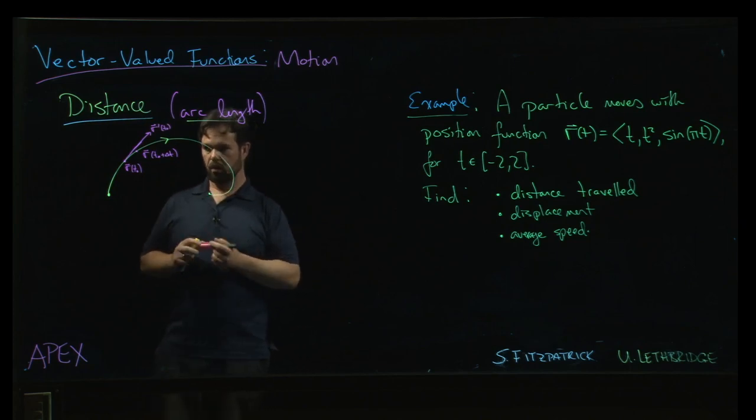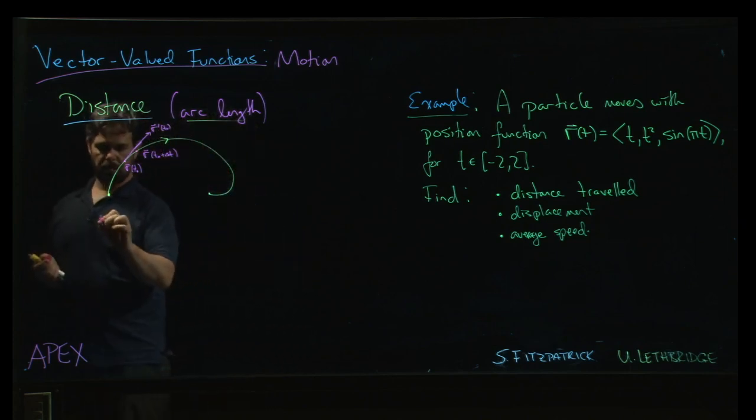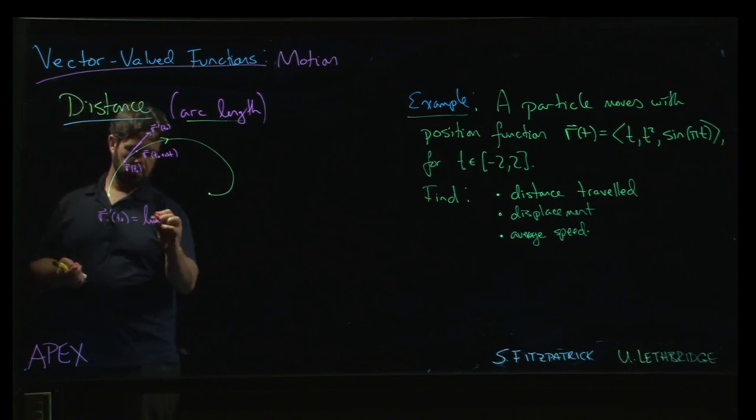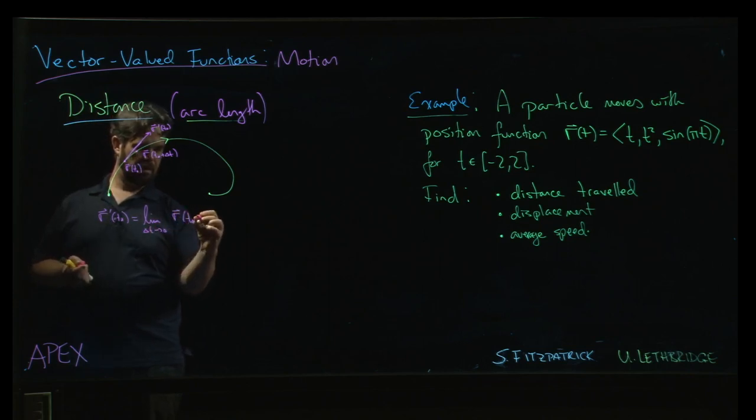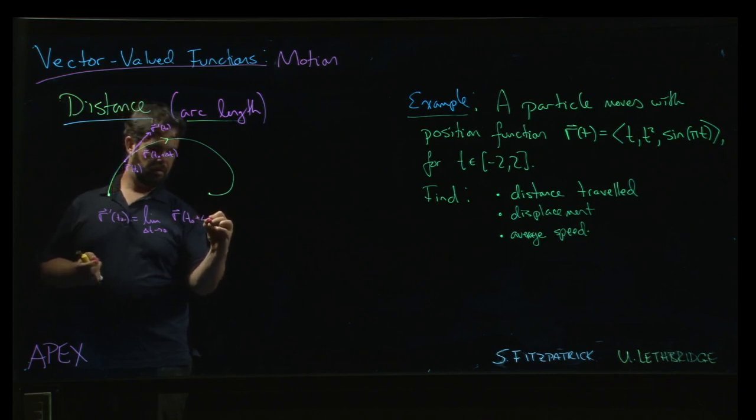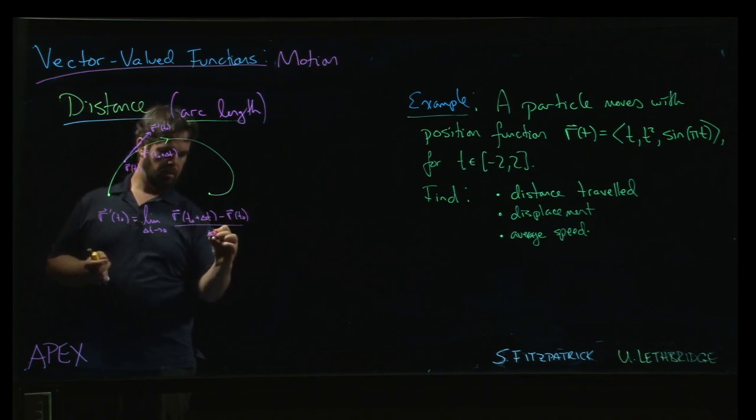But if you think about what is r prime of t0, r prime of t0 is the limit as delta t goes to 0 of r of t0 plus delta t minus r of t0 over delta t.